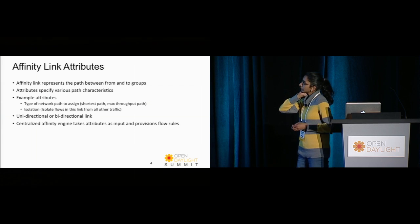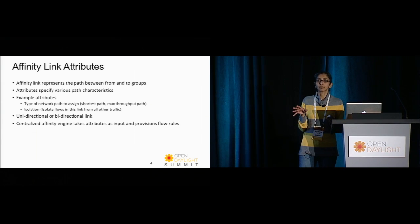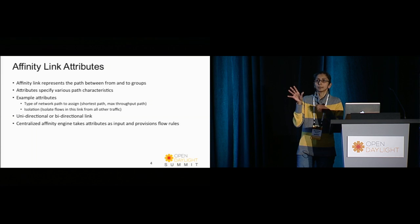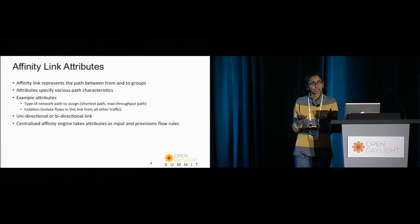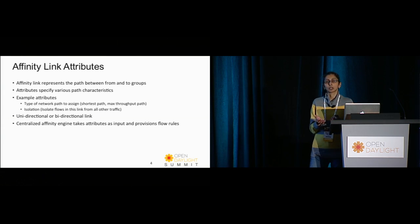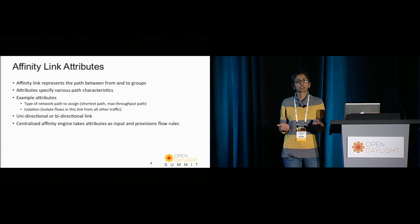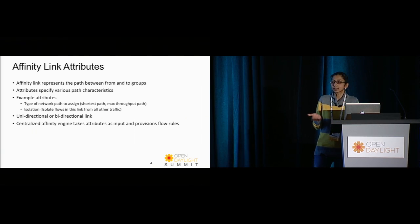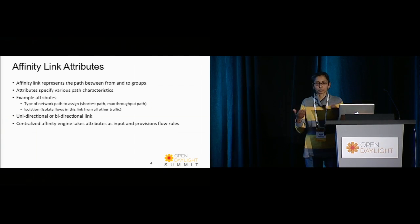With all this affinity configuration — groups, endpoints, nodes, and links — we have a centralized affinity engine running in the controller that compiles all of these and provisions routes and paths on the network. That's the essential job of what we call the affinity engine, or fitting engine.